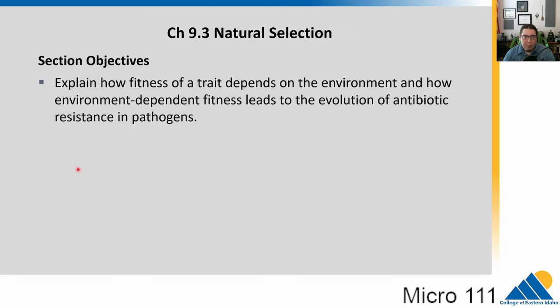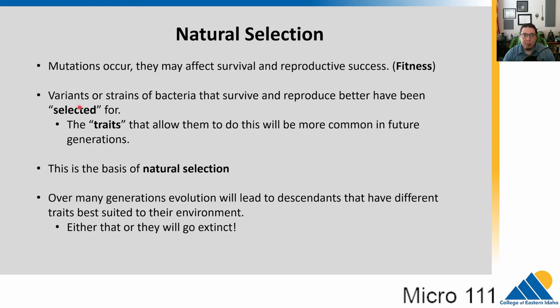We're going to start in chapter 9.3 because we need to talk about the process we call natural selection. There are related terms that go hand in hand with it: fitness and trait. We're going to talk about how fitness of traits depends on the environment and how this leads, in many cases as we'll see in healthcare, to antibiotic-resistant pathogens. So first, this term fitness — I think it often gets misunderstood.